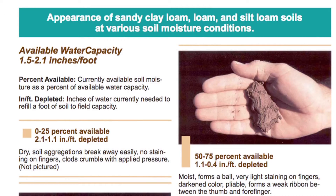Once we determine texture, we want to go ahead and do an example of determining available water in the soil. In this case we had a loam to sandy loam soil, so I'm going to be on page 4 of the guide for determining soil moisture. The available water capacity for this particular soil is estimated at between 1.5 and 2.1 inches per foot.